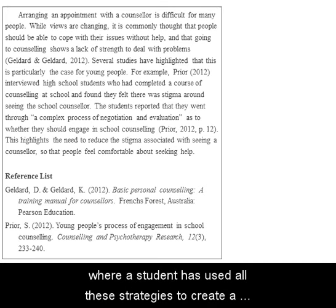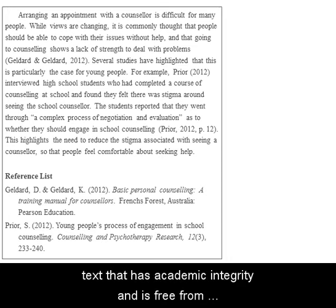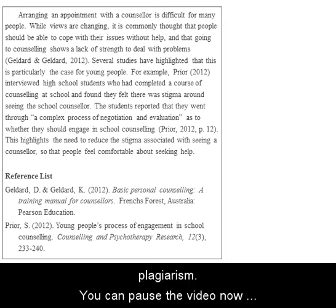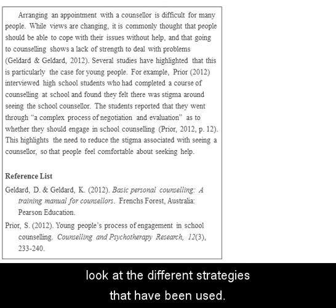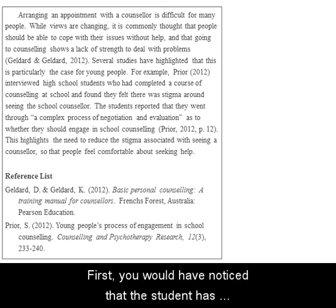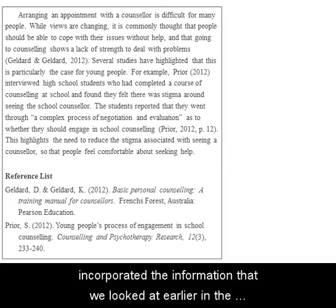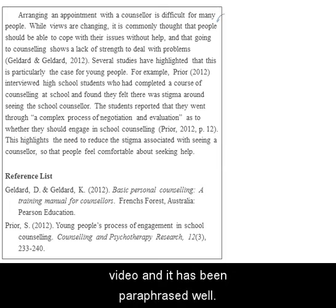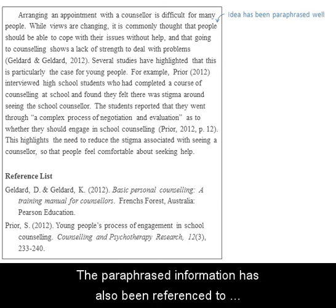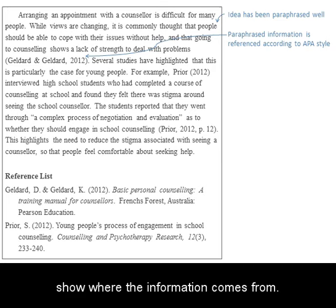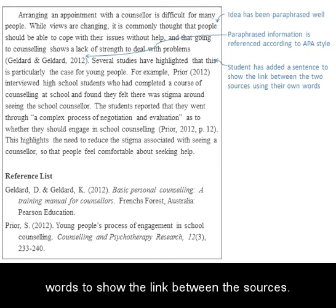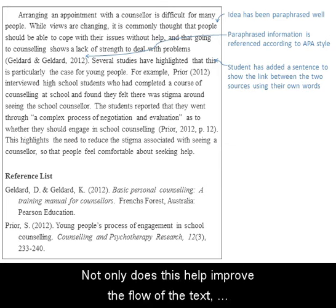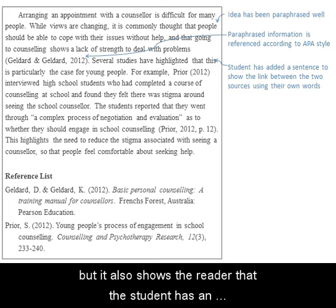Let's now take a look at a section of an assignment where a student has used all these strategies to create a text that has academic integrity and is free from plagiarism. You can pause the video now if you like to read through the text. First, you would have noticed that the student has incorporated the information we looked at earlier in the video and it has been paraphrased well. The paraphrased information has also been referenced to show where the information comes from. The student has also added in a sentence using their own words to show the link between sources — this helps improve the flow of the text and shows the reader that the student has an understanding of the relationship between the ideas in different texts.